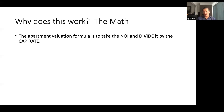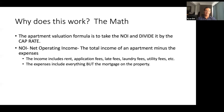The apartment valuation formula — you might want to take a screenshot or write this down — is to take the NOI, that's your net operating income, and divide it by your cap rate. I'm going to explain this: your net operating income is the total income of an apartment minus the expenses.